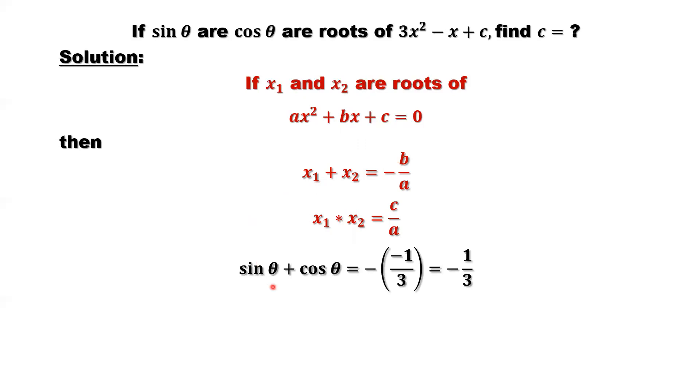Because sine theta and cosine theta are two roots of our equation, sine theta plus cosine theta equals negative b over a. Negative b, our b is negative 1, a is 3. So equals negative 1 third. And the product of the two solutions equals c over a. Our a is 3, c, that's the number we want to find. So we have the two results.